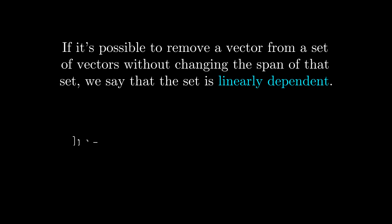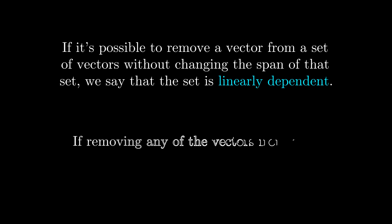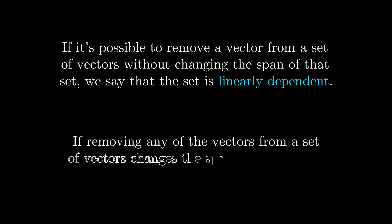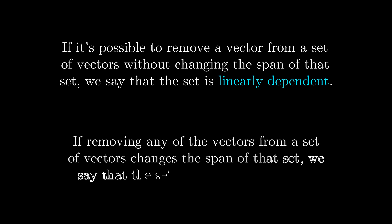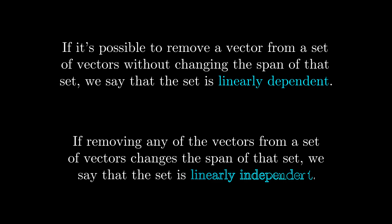If it's possible to remove a vector from a set of vectors without changing the span of that set, we say that the set is linearly dependent. However, if removing any of the vectors from a set of vectors changes the span of that set, we say that the set is linearly independent. To make sure you understand linear dependence and linear independence, let's do an exercise.